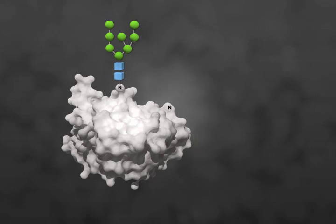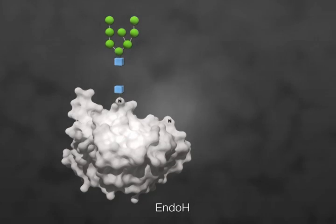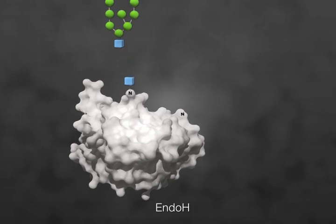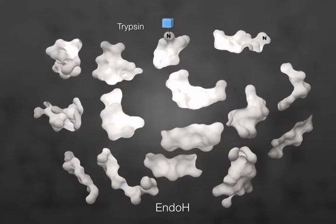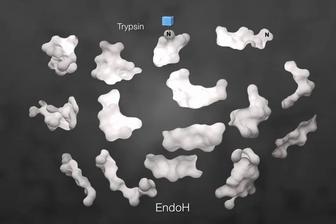Using glycosidases like Endo H that cleave between the two GlcNAc residues can help to determine occupancy in glycoproteins. Trypsin is used to digest the protein. The peptides are analyzed by mass spectrometry. It can be concluded that a glycan was present in any peptide that now carries the additional mass of a GlcNAc monosaccharide.